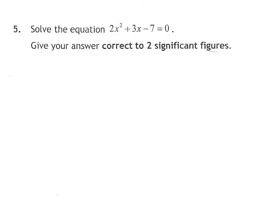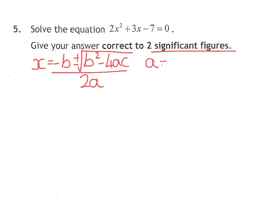Number five, we are solving this correctly to sig fig. The mention of sig fig or decimal places means it is the quadratic formula. Please copy this down correctly. It is on the formula sheet. Before I go any further, I'm going to write down A equals the first number, B equals the second number, and C equals the end number. I always work out 4AC first, which is 4 times 2 times minus 7, which is minus 56.